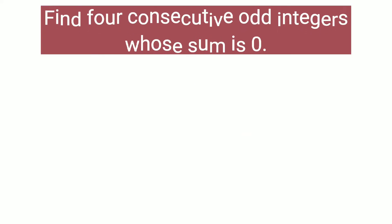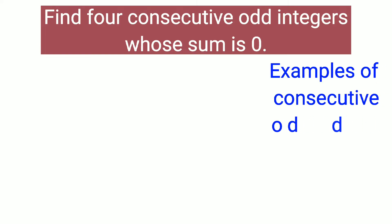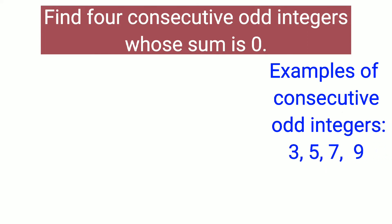Hi there, welcome to my channel. Today I'm going to show you how to solve a number problem involving linear equations. Find four consecutive odd integers whose sum is zero. To the right are examples of four consecutive odd integers: three, five, seven, and nine. In the problem, we are asked to find four consecutive odd integers.